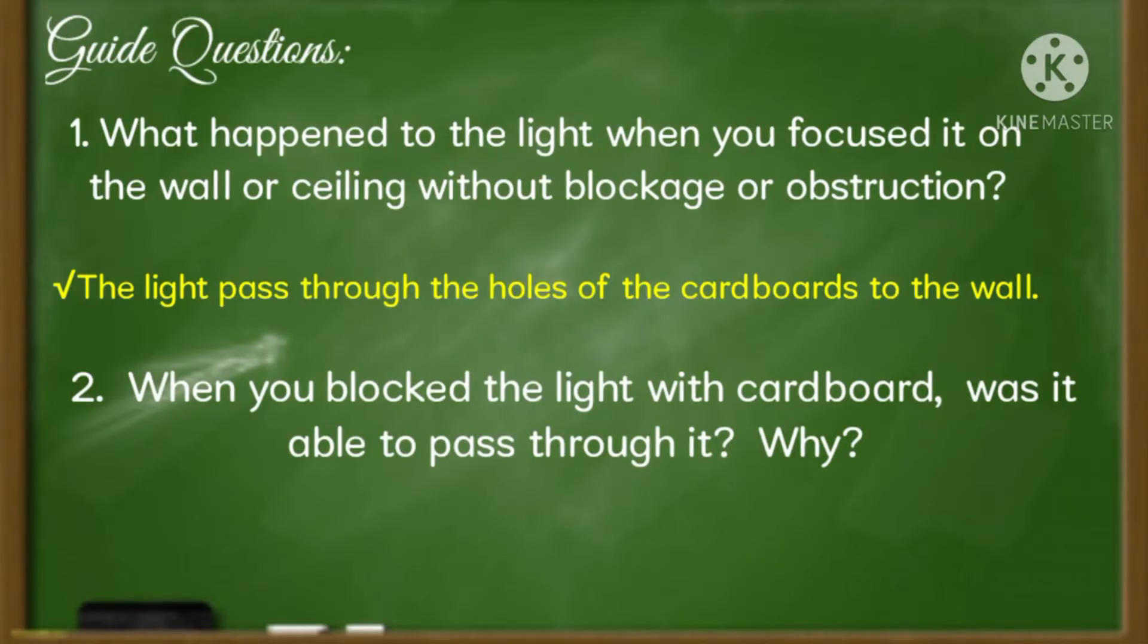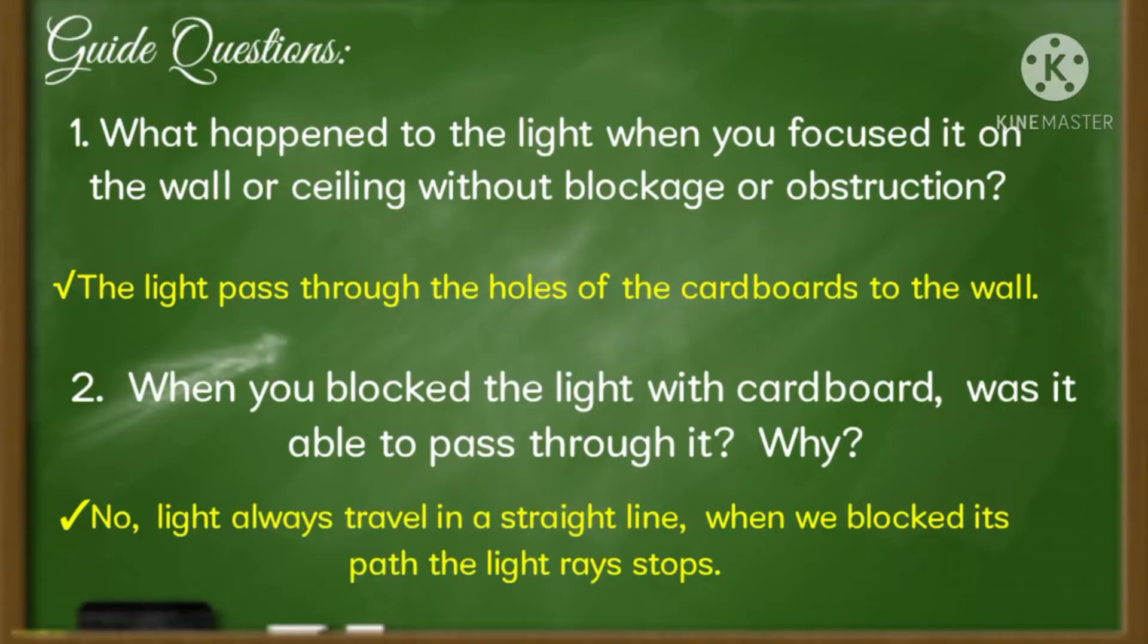When you blocked the light with the cardboard, was it able to pass through it? Why? Good. The answer is no. Light always travels in a straight line. When we block each path, the light rays stop.